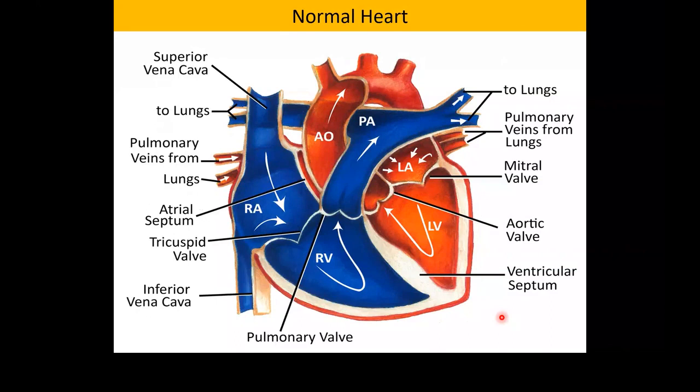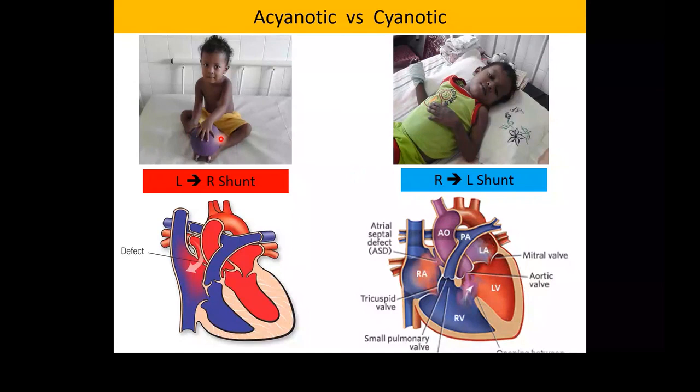Acyanotic children are not blue — for example in a simple ASD or VSD, the shunt is left to right so they cannot be blue. But if a VSD develops Eisenmenger syndrome, the shunt reverses and the child becomes blue. Cyanotic heart lesions have a right-to-left shunt, so desaturated blood mixes and pumps into the aorta — these children are blue. That is the pathophysiology of how cyanotic and acyanotic heart lesions develop their colors.